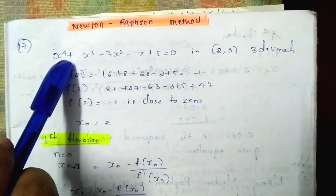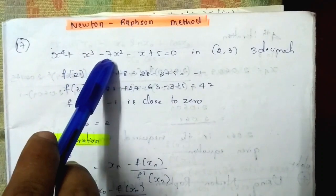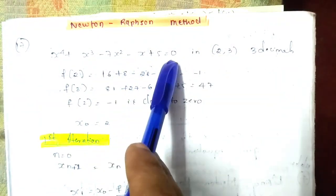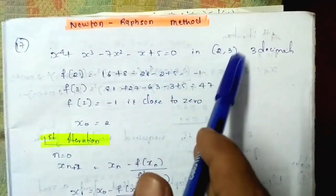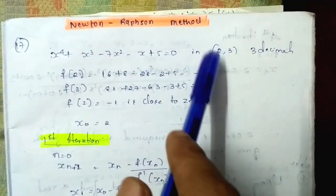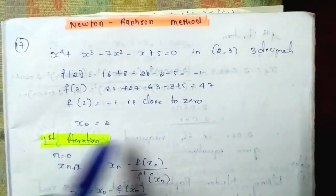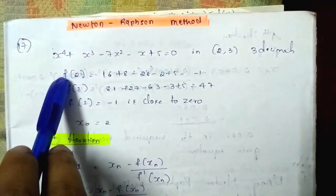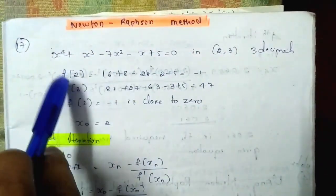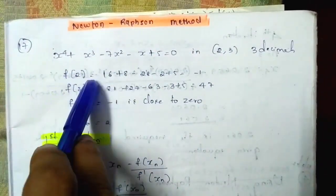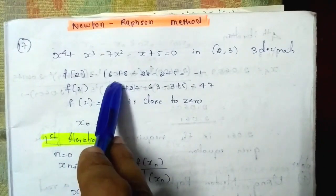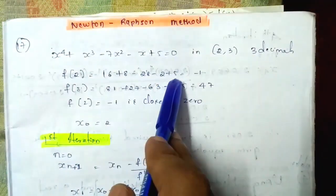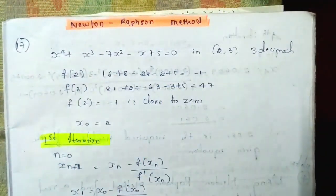Here we have a question: x raised to 4 plus x cube minus 7x squared minus x plus 5 equals 0. They have given two roots, 2 and 3. We have to put the values in this equation. f(2) equals 16 plus 8 minus 28 minus 2 plus 5, which equals minus 1.